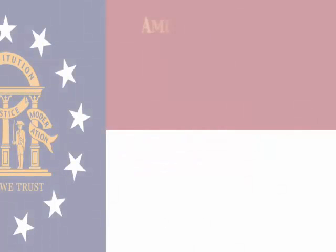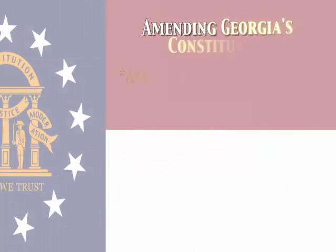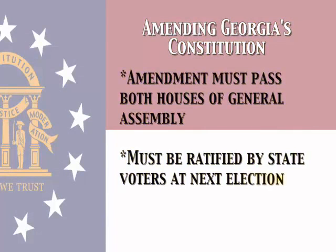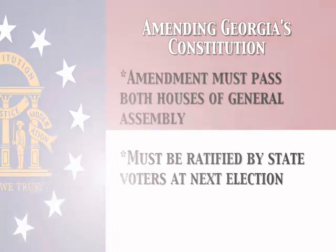To amend the constitution today, both houses of the Georgia General Assembly must pass the proposed constitutional amendment by a two-thirds vote. The ratification of that amendment then goes to the voters of the state of Georgia at the next general election, and it must be passed by a majority of the voters.